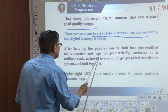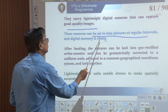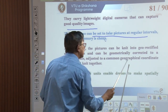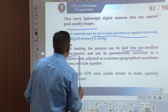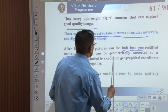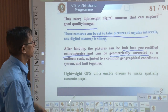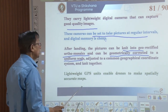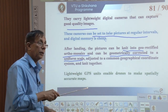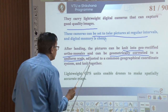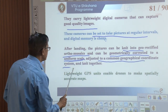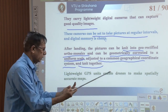After landing, the pictures can be knit together. The digital memory is stored on a chip, and these recordings are taken out and knit into a georectified ortho mosaic. This is similar to aerial photography and can be geometrically corrected — georeferenced or georectified — to a uniform scale. Aerial photography is terrain-dependent: as terrain varies, scale varies. Here, we can adjust to a uniform scale.